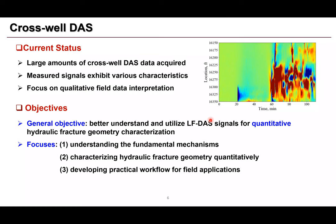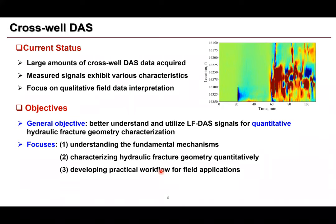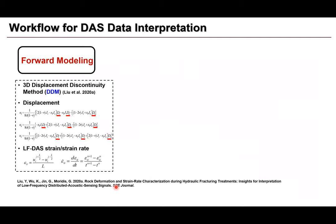The objectives of our research are: first, better understanding and utilizing this dataset for quantitative hydraulic fracture geometry characterization. We are not only using this data to quantify fracture hit location and time, but also want to maximize the business value by getting more fracture geometry information. We focus on: understanding the fundamental mechanism of the strain rate response near the fiber, characterizing hydraulic fracture geometry quantitatively, and developing a practical workflow for field applications.